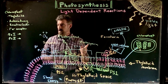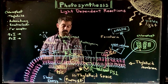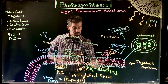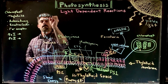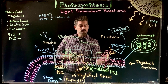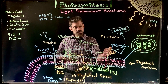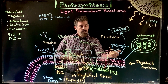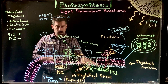Both photosystems have an antenna array, a reaction center, and a primary electron acceptor. The key difference between the two is that their reaction centers absorb slightly different wavelengths of light — 680 nanometers versus 700 nanometers. Both P680 and P700 are chlorophyll a molecules, but they interact with slightly different proteins. Those proteins are the primary electron acceptors that give electrons either to ferredoxin or to plastoquinone, directing them along different pathways.